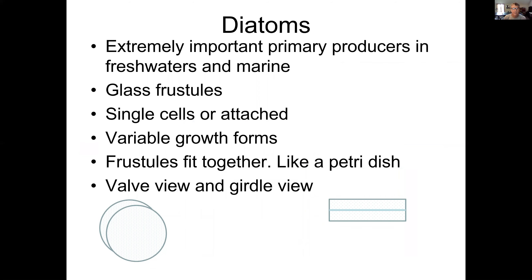The next group is diatoms, or Bacillariophyceae. They're very important primary producers in freshwaters and marine systems. The glass frustules are what set them apart — two pieces that fit together with quite variable growth forms. It's like a Petri dish with two halves. From the side in the girdle view it looks rectangular, but from the top in the valve view this particular diatom looks round.